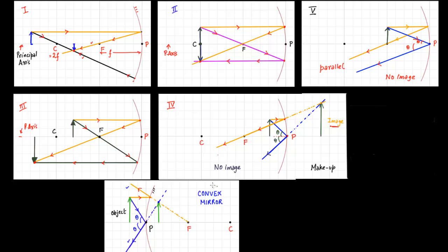This is the image formed in a convex mirror. The name 'convex' comes from the convex surface of the mirror.